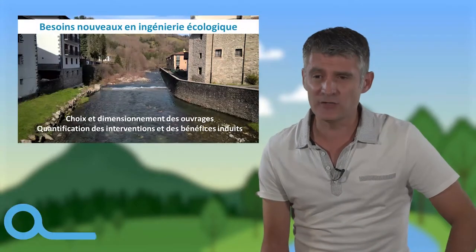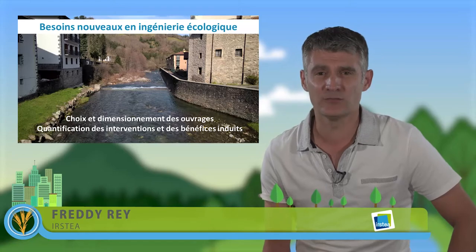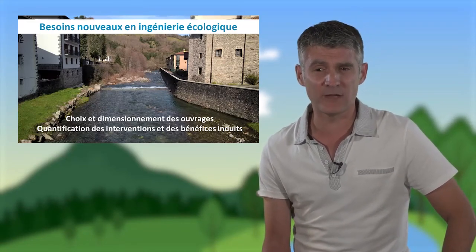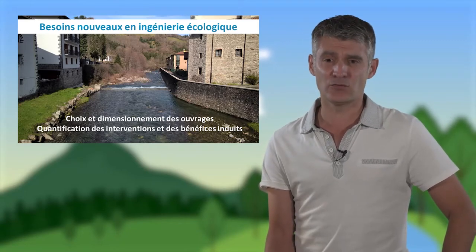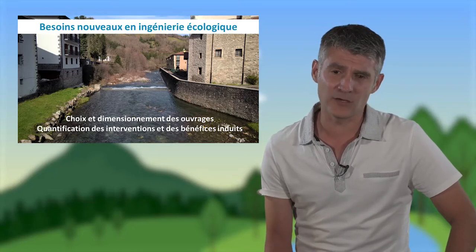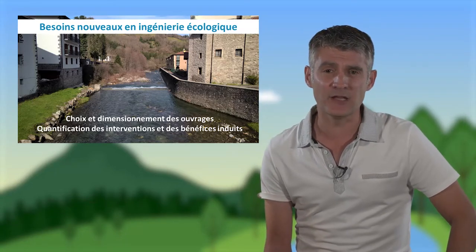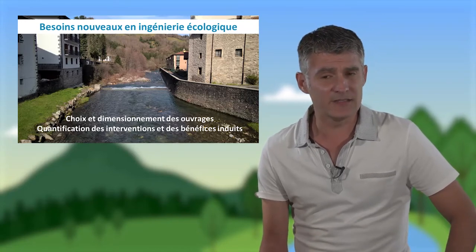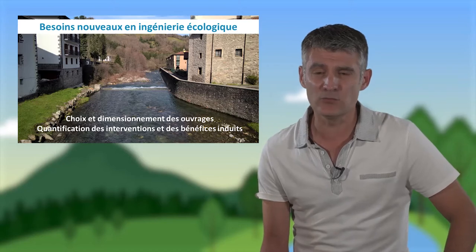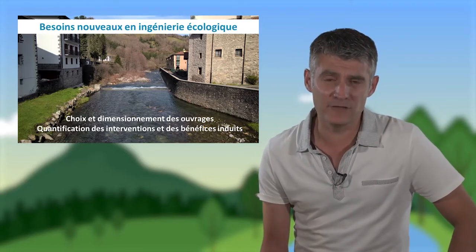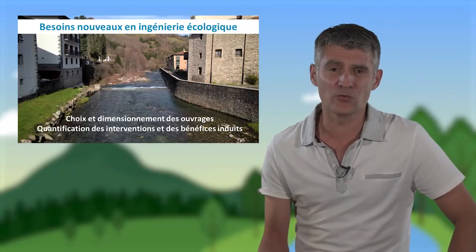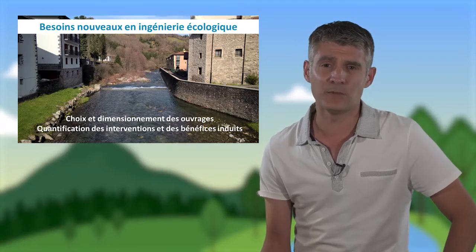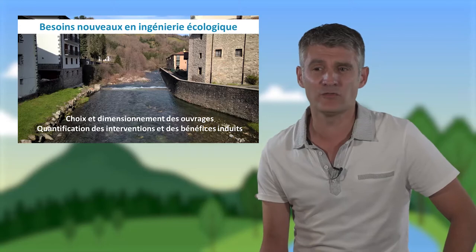Cela va impliquer des besoins nouveaux en ingénierie écologique, notamment pour le choix et le dimensionnement des ouvrages, ainsi que la quantification des interventions et des bénéfices induits. On voit ici qu'en rive droite une protection contre les inondations est assurée par une digue faite de pierre et de béton, sans composantes végétales. À gauche, un aménagement plus rudimentaire — un petit enrochement avec une couverture végétale au niveau des berges. Un compromis pourrait être trouvé, avec des ouvrages de type caisson végétalisé : structures en bois rigides capables de stabiliser des berges tout en intégrant une composante végétale.